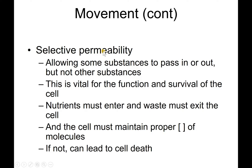Selective permeability only allows some substances to pass in or out, which is a very important function for our cells because it's one of the things that keeps us alive — you can't just have anything getting to the cells. Nutrients must enter and waste must exit; it's important to get rid of byproducts, otherwise you get toxic buildup. The cell must maintain a proper concentration of molecules, or it can lead to cell death.